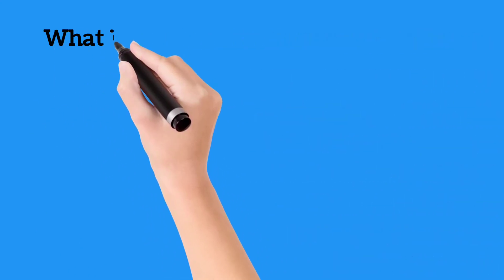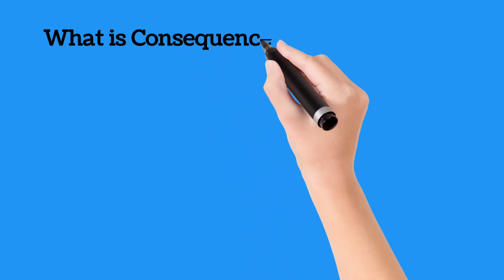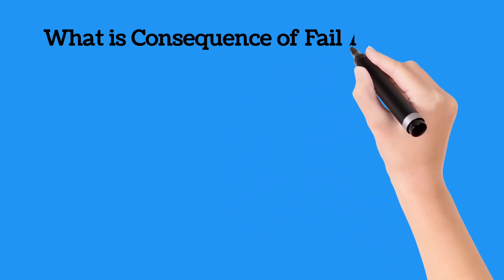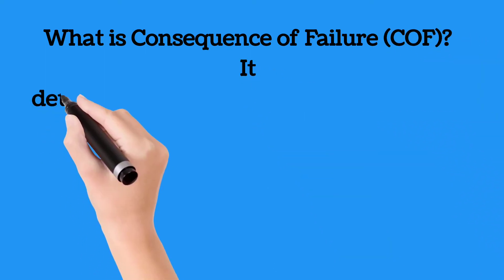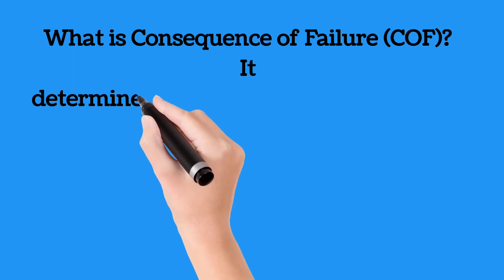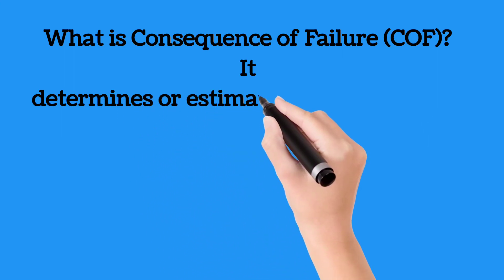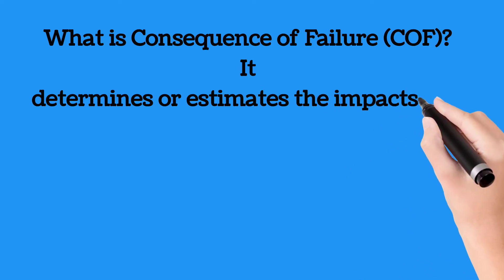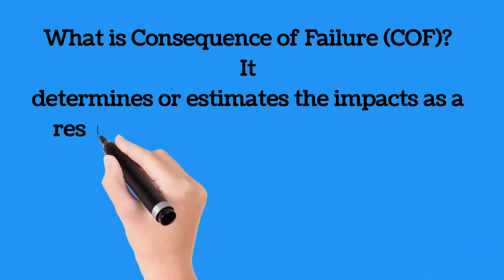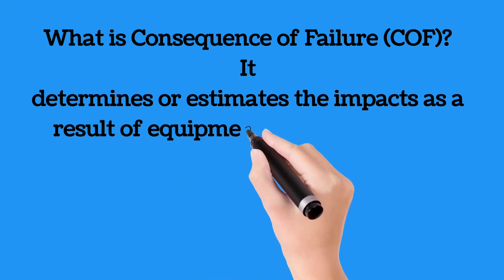The consequence of failure represents how much it would cost if particular equipment or machinery breaks down. The consequence of failure is calculated as the combined values of the consequences for damage to the failed equipment, damage to the surrounding equipment, loss of production, the cost due to personnel injury, and the damage to the environment.